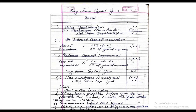After indexed cost of acquisition, the next step is less Indexed Cost of Improvement. The formula is similarly: Cost of Improvement × CII of previous year ÷ CII of year of improvement. Improvement means any renovation done on your property, for which you can claim a deduction. When you subtract indexed cost of acquisition and improvement from net sale consideration, you get Long-Term Capital Gain. If there is any new purchase or investment made, subtract that also to get the final Net Long-Term Capital Gain.